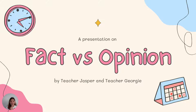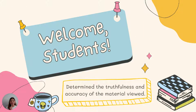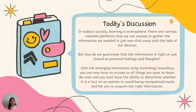Hello kids! I am Ma'am Georgie and for today's lesson, we are going to determine the truthfulness and accuracy of the material viewed. There are various internet platforms that we can access to gather the information we need. But how do we guarantee that the information is right or just based on personal feelings and thoughts? With the emerging innovations using technology nowadays, you can now have access to all things you want to learn. But we need to be wise — you must have the ability to determine whether it is a fact or an opinion.